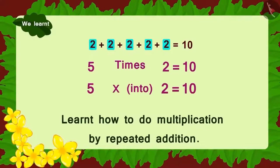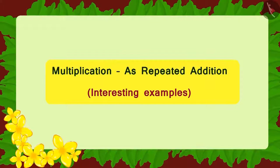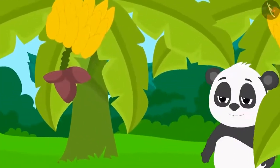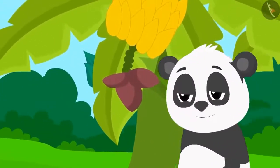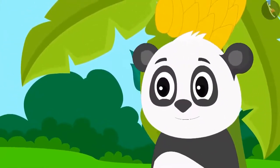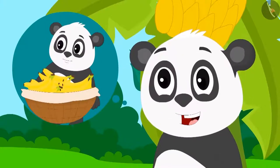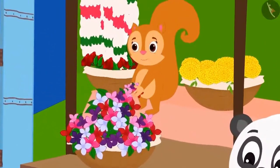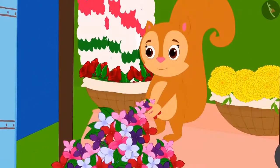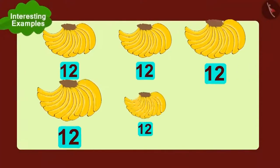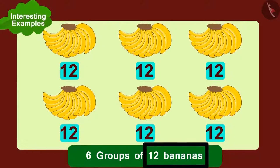Children, in the last lesson we learnt how to multiply by repeated addition. In this lesson, we will see some interesting examples. Golu Panda's banana orchards reaped a good harvest this season. He thought he could earn a lot of money by selling bananas in the market. At the same time, Chanda Squirrel had set up her flower stall.